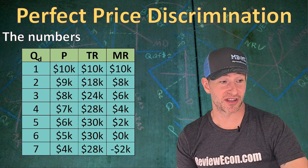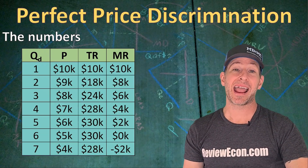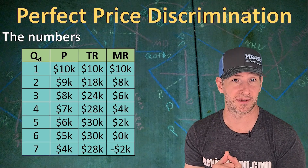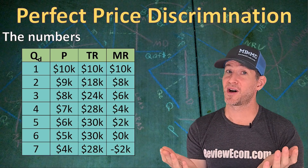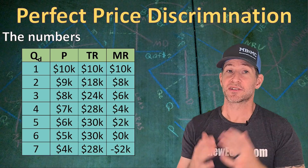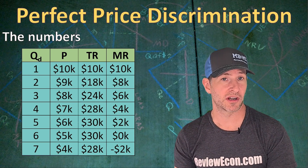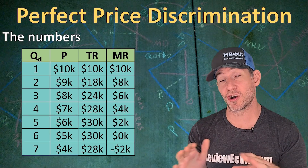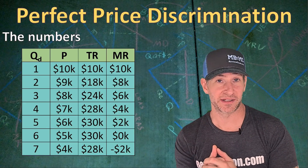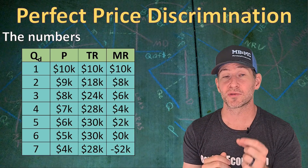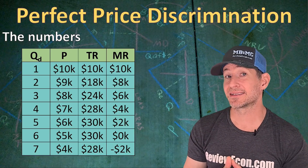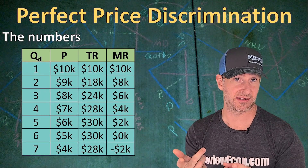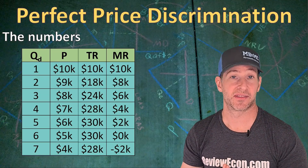We have a table with the numbers of different quantities of students that could go to college and the prices they would pay for tuition. For the purposes of our numbers and our graph, we're going to assume this is a monopoly. The table has all the different quantities that would go to college at each of the different prices of college tuition — these numbers are for a single price monopoly with no price discrimination. As you know from the monopoly graph, the marginal revenue is going to fall faster than the price, because as they lower the price of the next unit of output, they have to lower the price on all previous units.